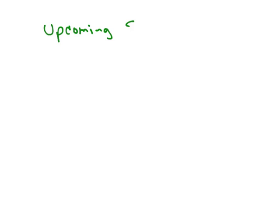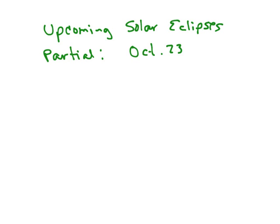Similarly, we can look at upcoming solar eclipses. I'm going to include partials here because otherwise it's going to be a very short list. There's a partial visible from parts of North America on October 23rd, 2014, and that's associated with that October lunar eclipse — both are close enough to the nodes that we get a little bit of something. The next one in 2015 requires being in Iceland, Europe, Northern Africa, or Northern Asia.